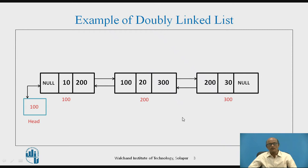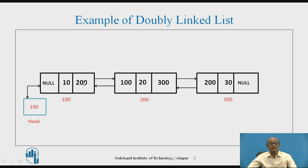This is an example of a doubly linked list in which we observe that there are three nodes, held by the starting pointer called head, which stores the address of the first node. Each node contains three parts: the left address part, the middle data part, and the right address part.